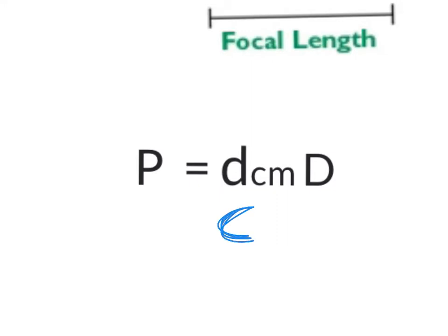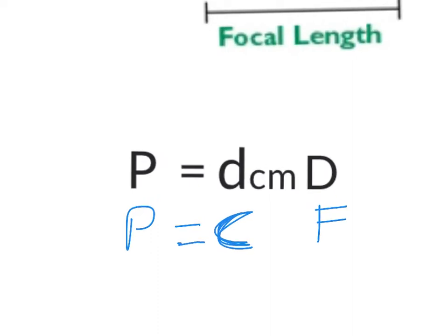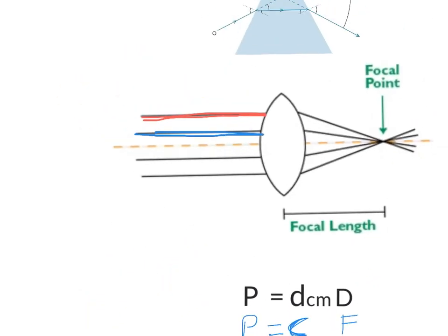Sometimes you might see the big D written as an F. So sometimes you might see it as P equals C times F. But the concept is the same.